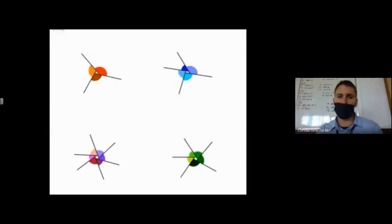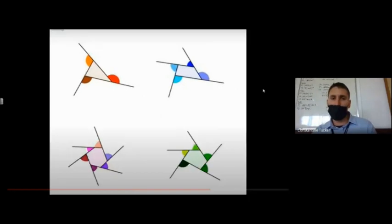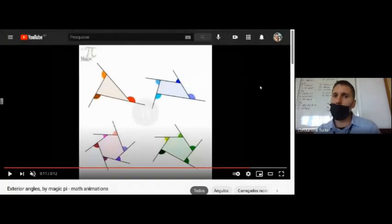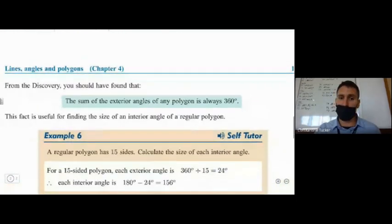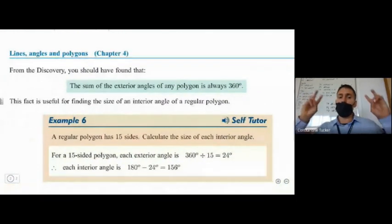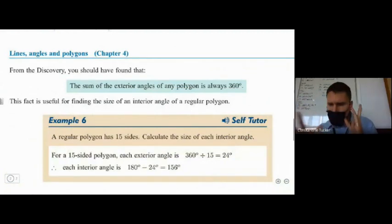Wow, yes, that's beauty, isn't it? So the sum of the exterior angles in any polygon in the world is 360 degrees. Okay, so basically that is pretty much it with the theory, the new theory. But let's talk a little bit about what sort of problems we can get here.